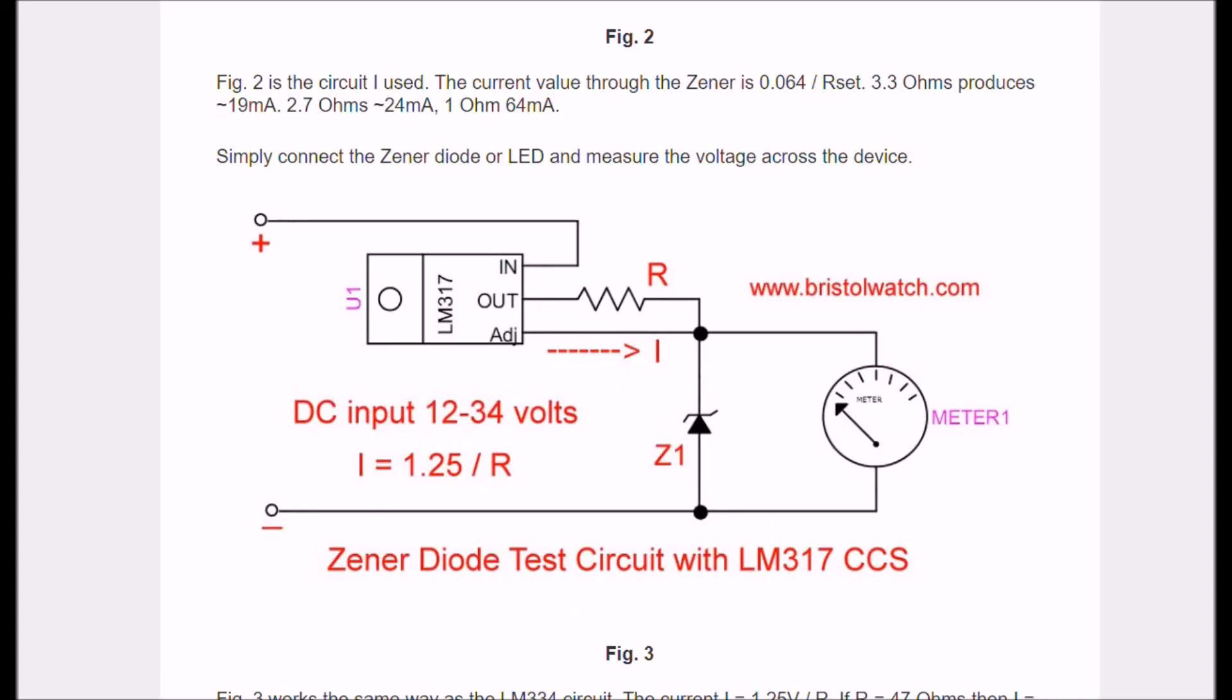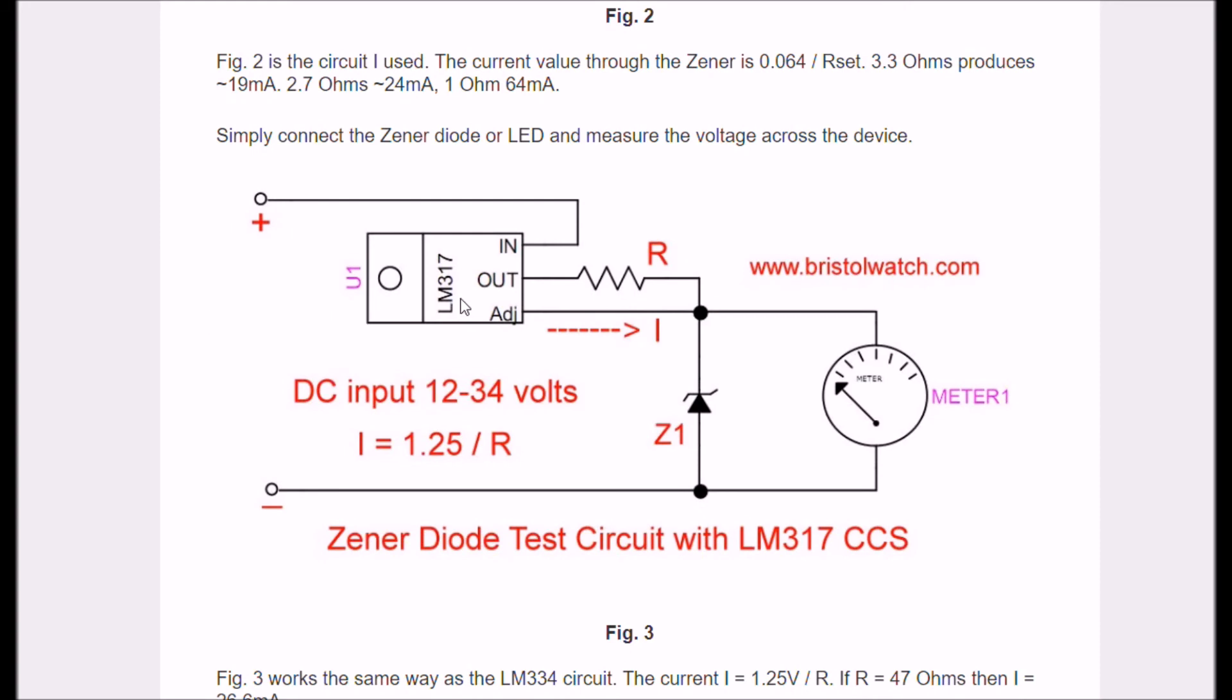This circuit should also look familiar. I'm using an LM317 as a constant current source, and that's determined by 1.25 volts divided by R. If R is 100 ohms, you get 12.5 milliamps. If it's 47 ohms, you get 20, 19, 20 milliamps, whatever. Your current is set strictly by the value of R divided into 1.25.